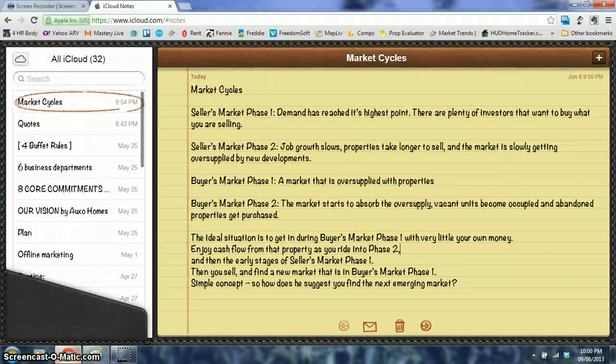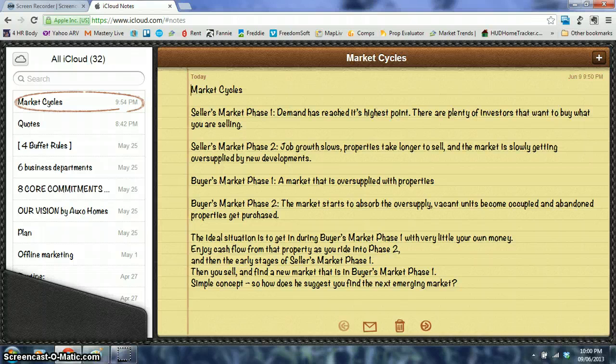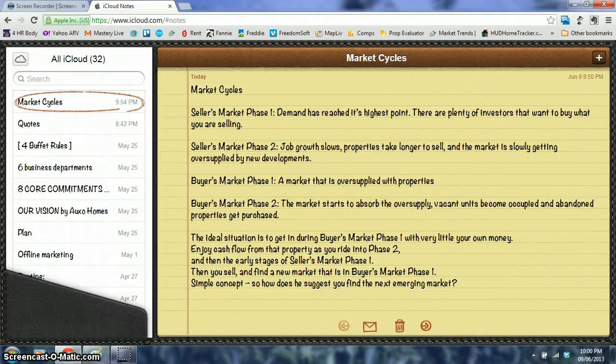The way a market cycle works - the seller's market phase one is when the demand has reached its highest point and there's plenty of investors that want to buy what you're selling. The seller's market phase two is when job growth slows, properties take longer to sell, and the market is slowly getting oversupplied by new developments.